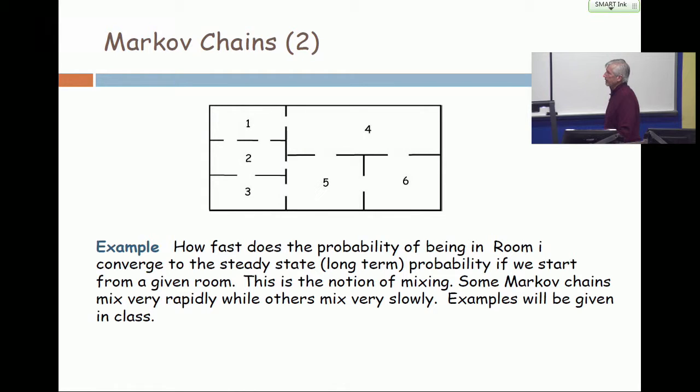Same thing. How fast does the probability of being in room I converge to the steady state? There should be some steady state thing. You know, you're moving around, moving around. You come back a month later, there's some probability distribution. What's the probability you're in room one? Probability you're in room two. Probability you're in room three, four, five, and six.